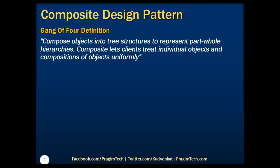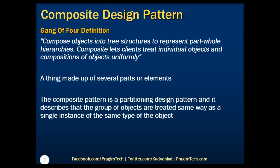Let's now first understand what composition means. Composition means a thing made up of several parts or elements. In software engineering, the composite pattern is a partitioning design pattern. We can see that the composite pattern describes a group of objects that is treated the same way as a single instance of the same type of object.